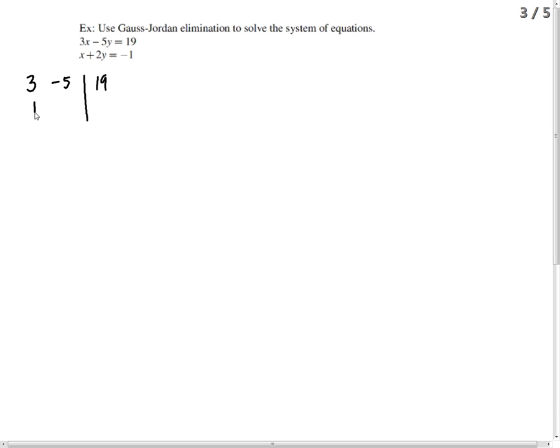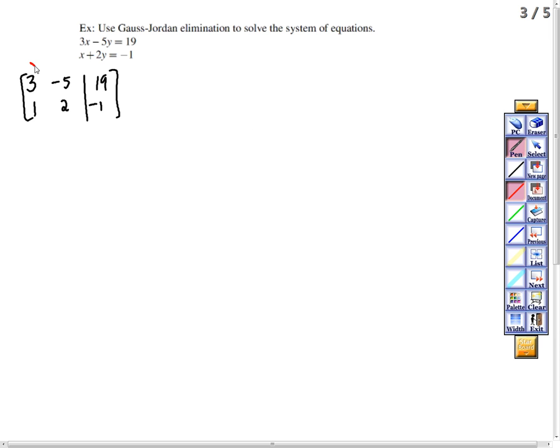So for the second equation, we have 1, 2, negative 1. Remember, this is the x column, the y column, and this is the constants.